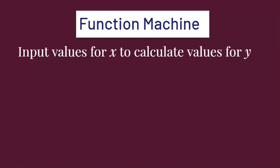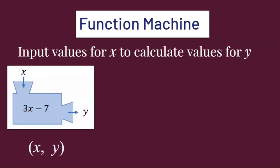In our function machines, we will input values for x to calculate values for y. You'll put in the value for x, get out the value for y, and you can write the input and the output together as an ordered pair.